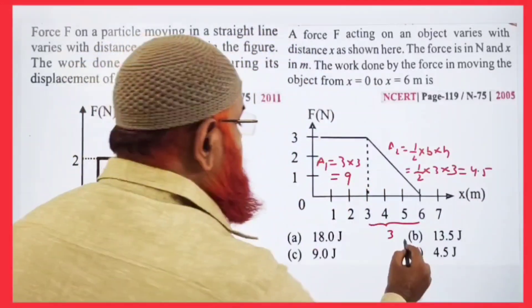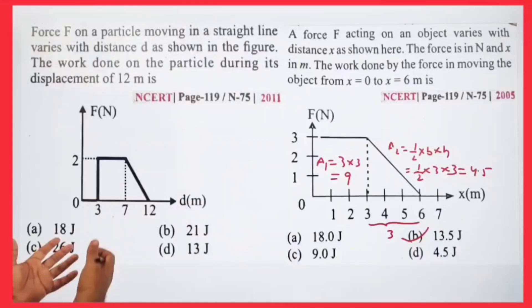3 times 3 is 9 which is nothing but 4.5 here. So 9 plus 4.5 gives you 13.5. So the same method we use here also.